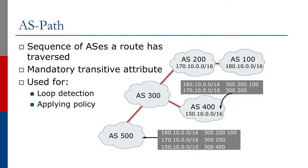The AS path is a mandatory attribute and it's transitive, so it must be set and must be passed on as the prefix traverses autonomous systems on the internet. It's used for loop detection and for applying policies in BGP like those just described.